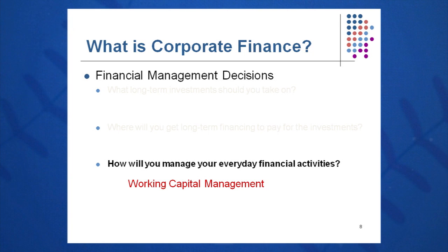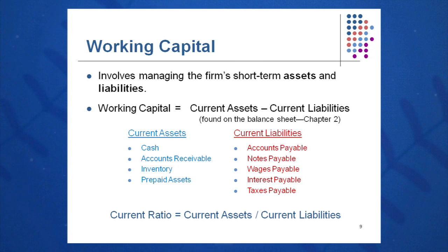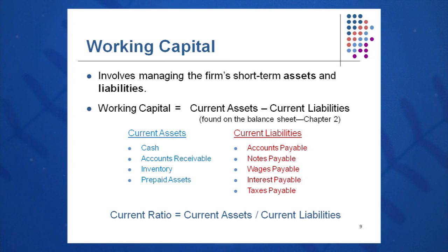The third decision on the mind of the CFO and CEO every day is how will I manage my everyday financial activities? Here we're talking about working capital management. Working capital is current assets minus current liabilities. The key word is manage — you must manage these details. Current assets include things like cash, accounts receivable, inventory, and prepaid assets. Current liabilities include accounts payable, notes payable, taxes payable, wages payable, and interest payable. When we subtract these two, we get working capital, which must be managed every day by the chief financial officer and others in the company.